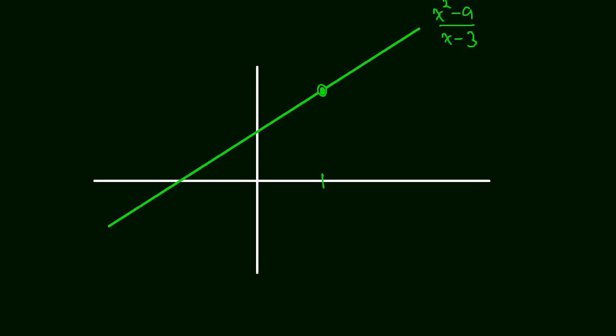But the theorem says that if you have two functions that are the same every single place except for only one single point, and that is the case, that's what we have, then the limits are going to be the same. Okay, so I'll see you in the next video.